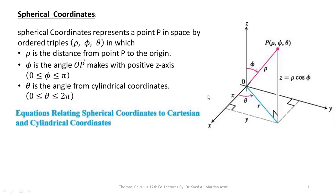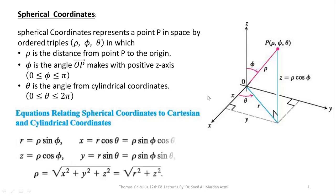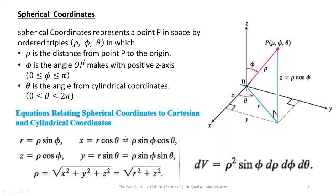That is a brief introduction of the spherical coordinate system. Next, we have the transformation equations. The transformation equations for spherical and Cartesian coordinate systems are: r equals rho sine phi; x equals r cos theta, which equals rho sine phi cos theta; z equals rho cos phi; y equals r sine theta, which equals rho sine phi sine theta. The value of rho is the square root of x squared plus y squared plus z squared, or equivalently the square root of r squared plus z squared. The small differential volume element in spherical coordinates is written as dV equals rho squared sine phi d rho d phi d theta.